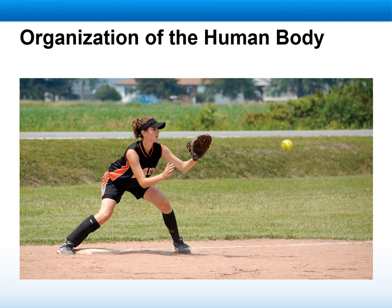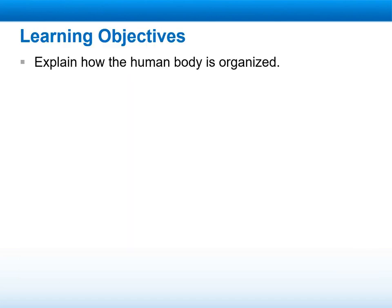Welcome, dear students, to a new week. In this week, we will start with Chapter 27, which is about the organization of the human body and all of the systems included in the body. First of all, we're going to talk about how the human body is organized together.